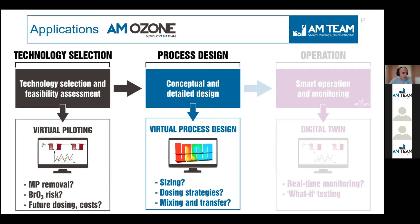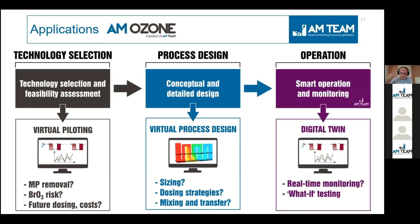In the operational phase — once you have a full-scale or demo ozonation plant — using basic online or offline sensor data such as flows, DOC, and ammonia levels, the AMAZON model can predict micropollutant removal and bromate formation in real time. This is what we call a digital twin.